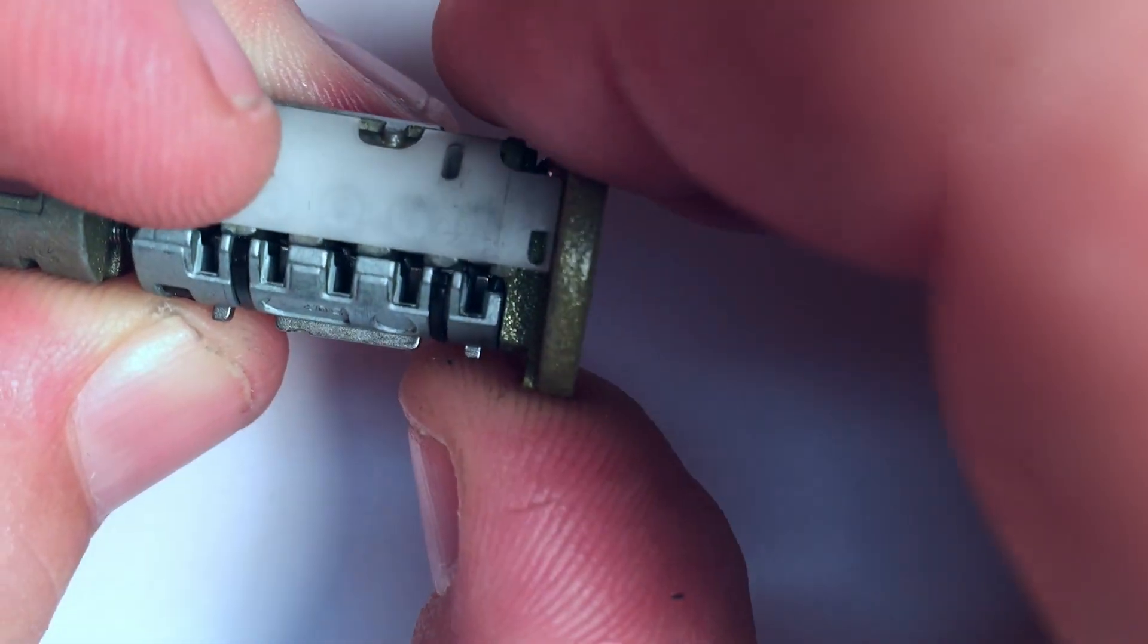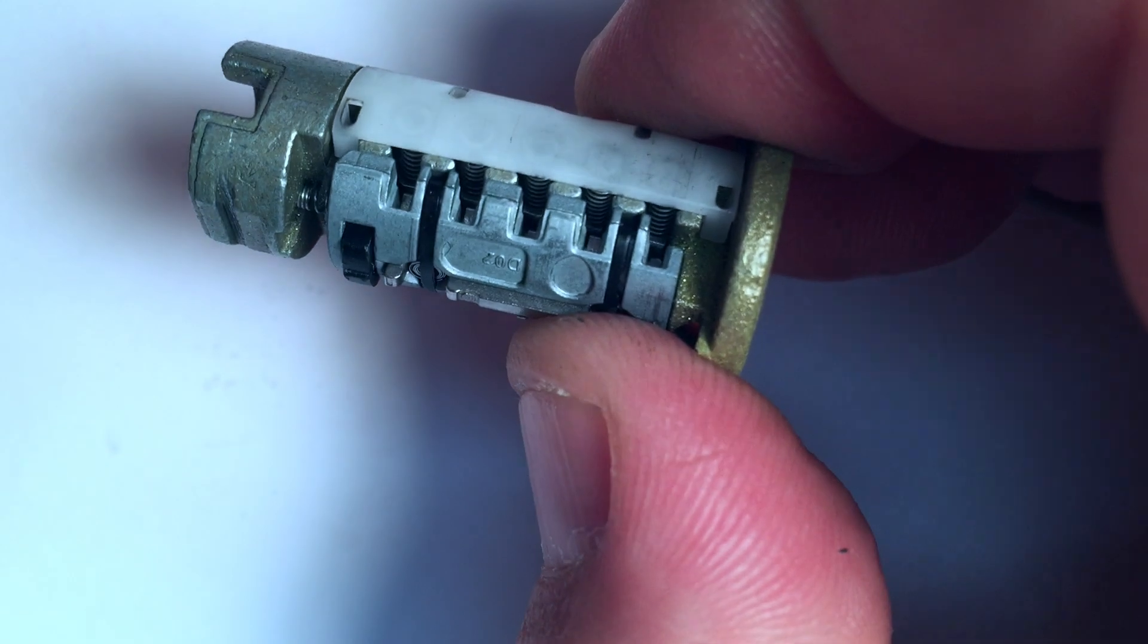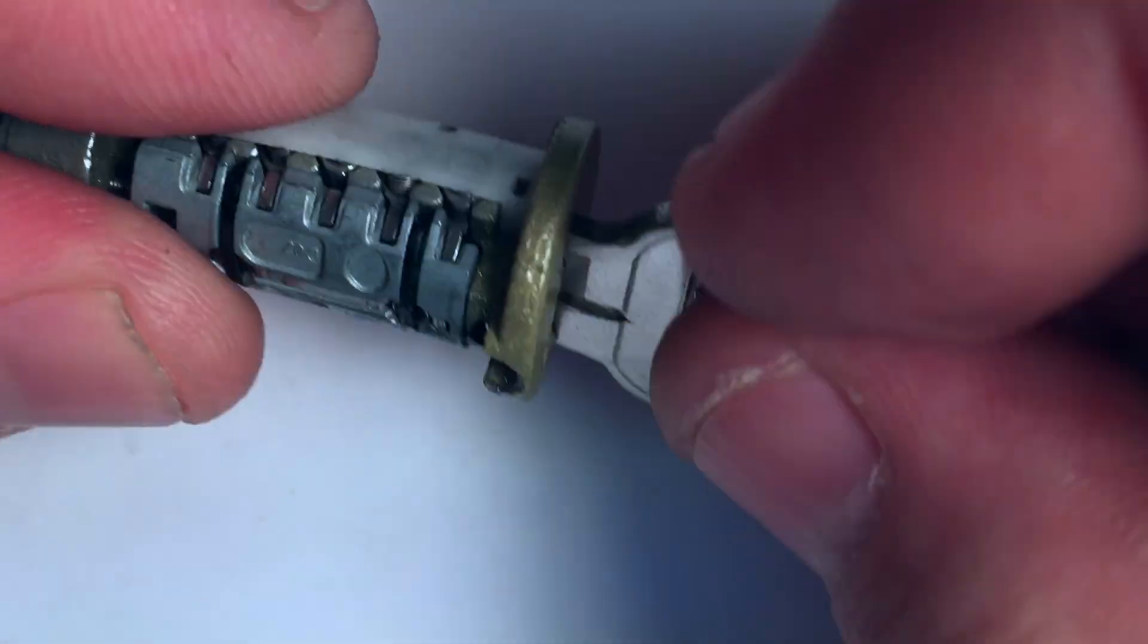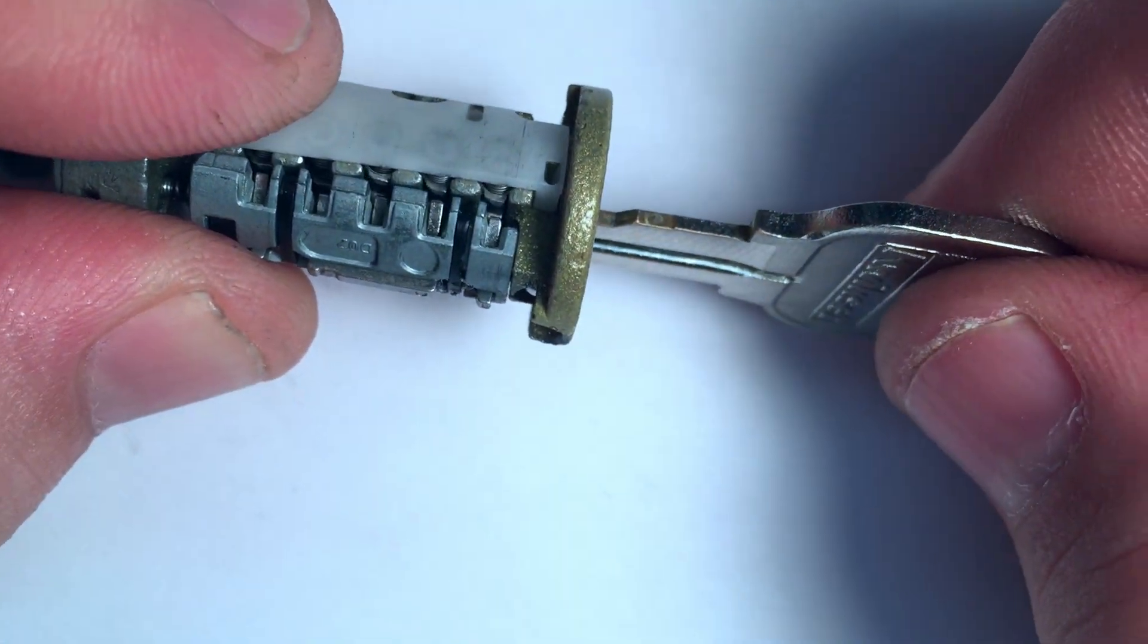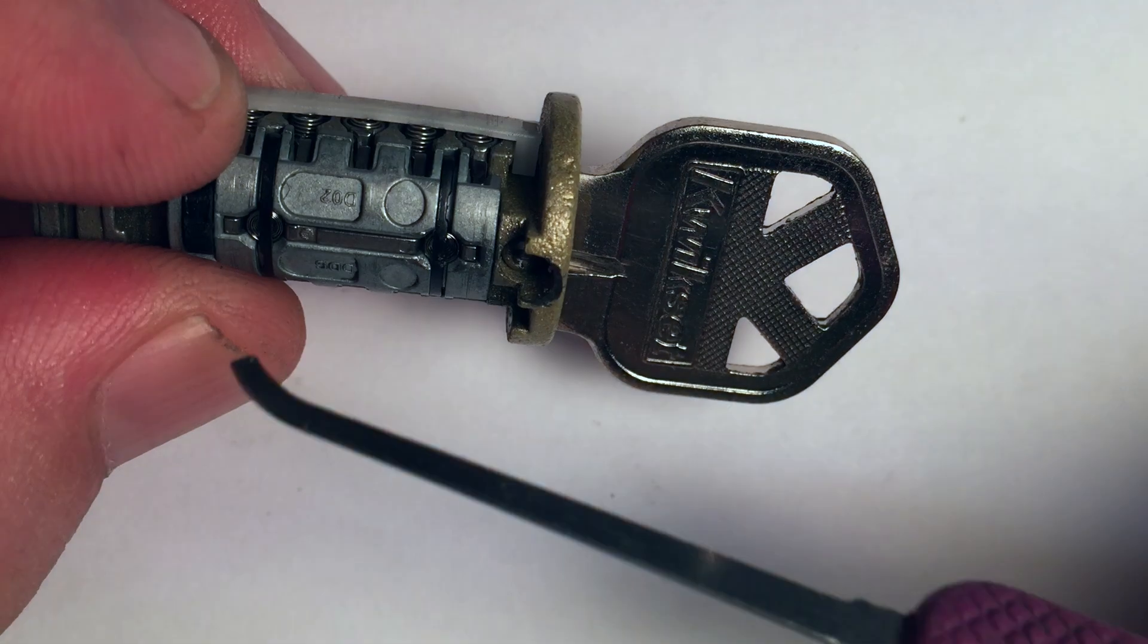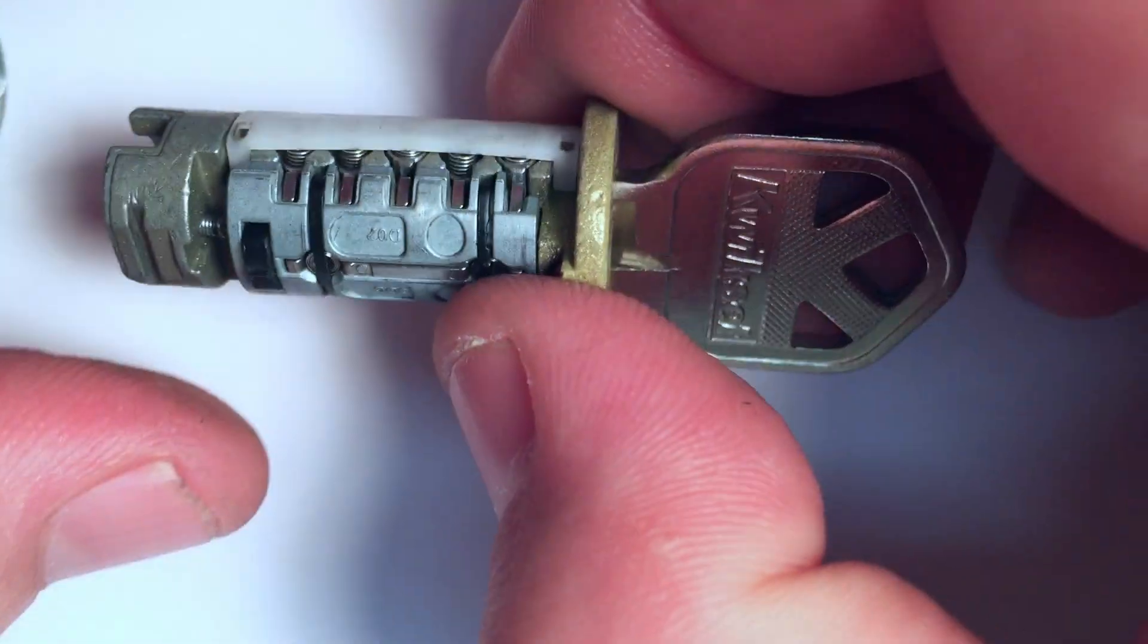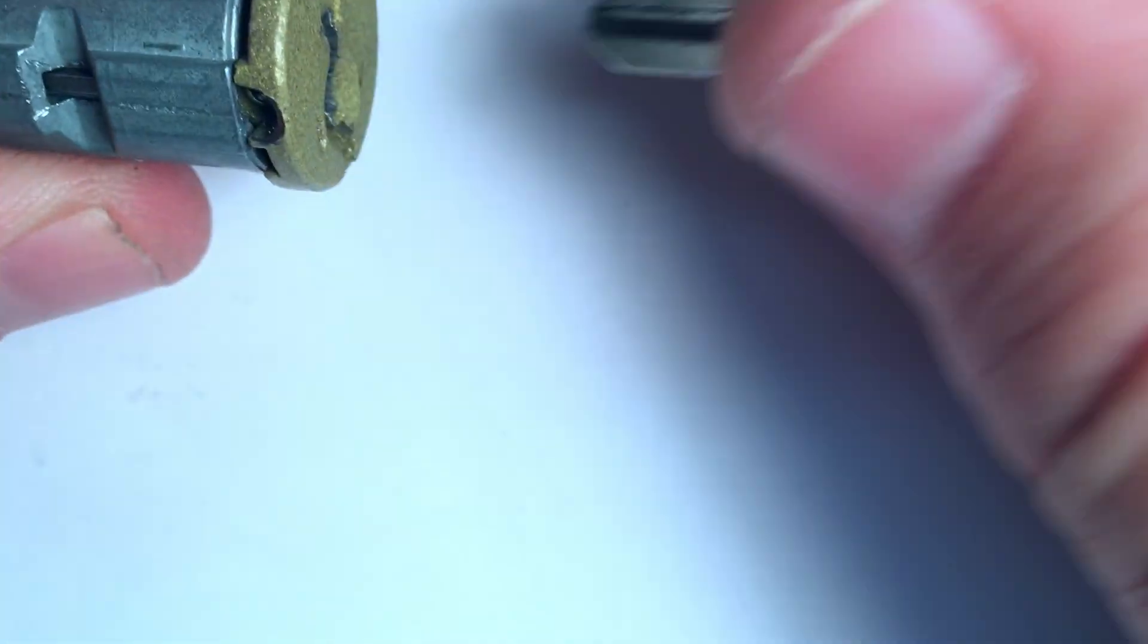You can see how squared off this sidebar is. If we put the key in, you can see that sidebar retracts all on its own. No rotational force is required to retract that sidebar. These captured springs do all the work. If I line up the sidebar with the channel, the plug doesn't turn.